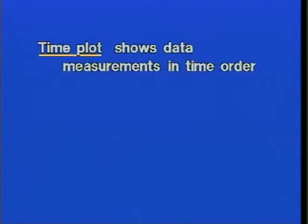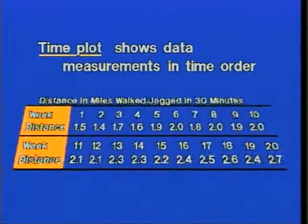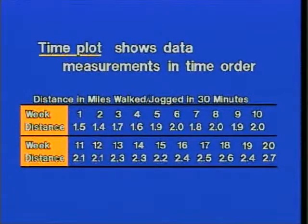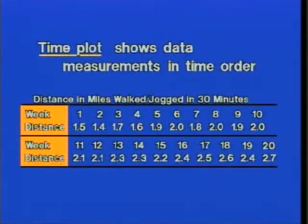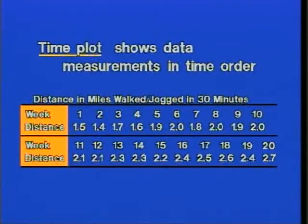Another kind of graph is called a time plot. Time plots show data measurements in time order and allow us to make certain interpretations that are more difficult when just looking at a chart. For example, here's a chart of distances in miles walked or jogged in 30 minutes, covering weeks one through twenty. By studying the chart we can notice trends, but it takes longer than using a time plot.